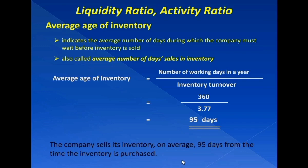The smaller or the shorter the average age of inventory is, the better. Again, that is in general, because other factors like what I just discussed about the inventory turnover must also be considered. The average age of inventory is also called average number of days sales in inventory.